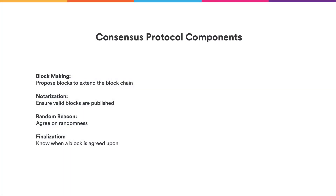The first is block making, which creates candidate blocks out of which we can build blockchains. The next is notarization, which is responsible for identifying valid blocks out of which we can build valid blockchains. Next we add the random beacon, which gives us randomness to further enhance our protocol. And finally, we use finalization, which tells us when we've actually reached agreement.